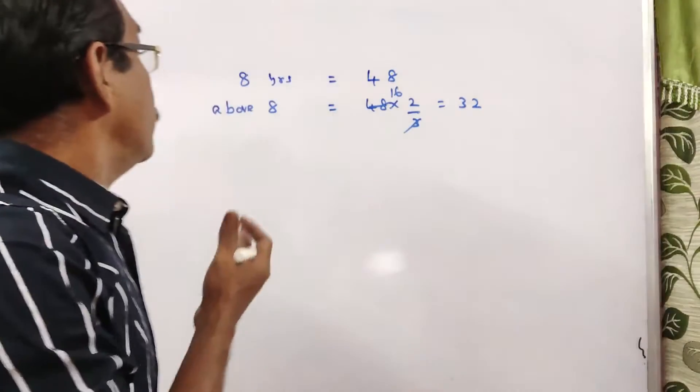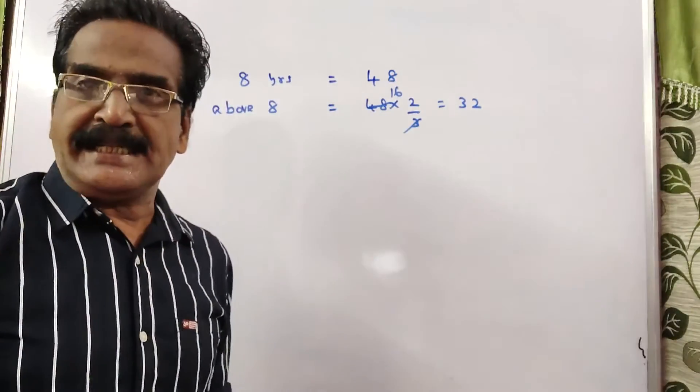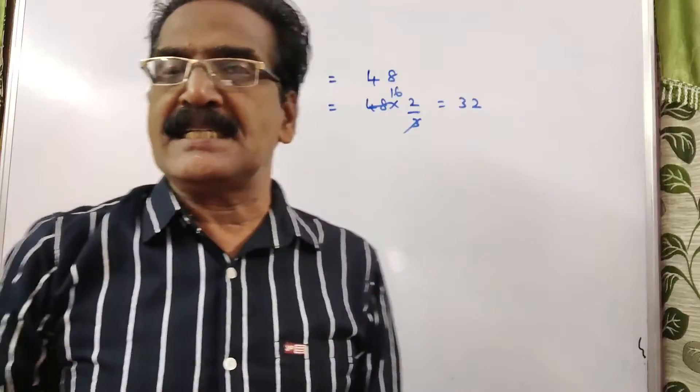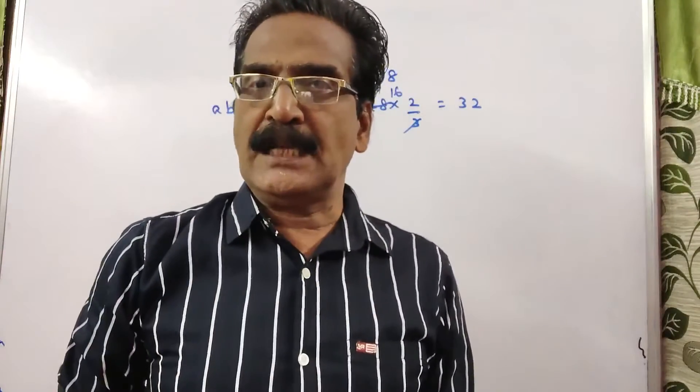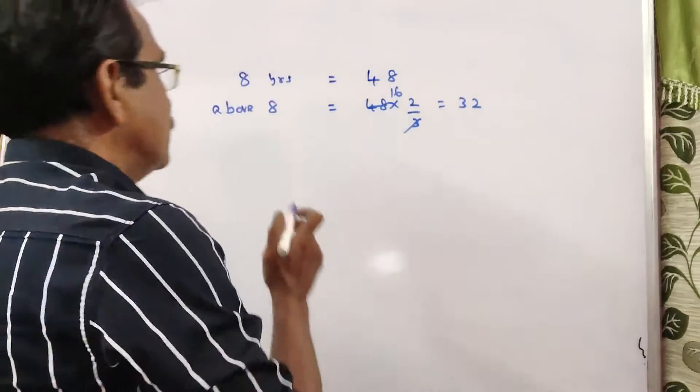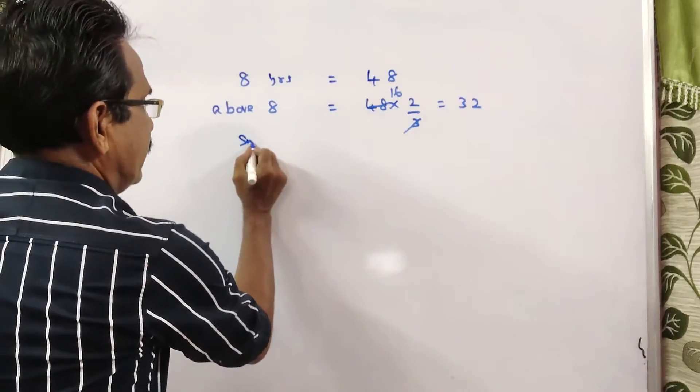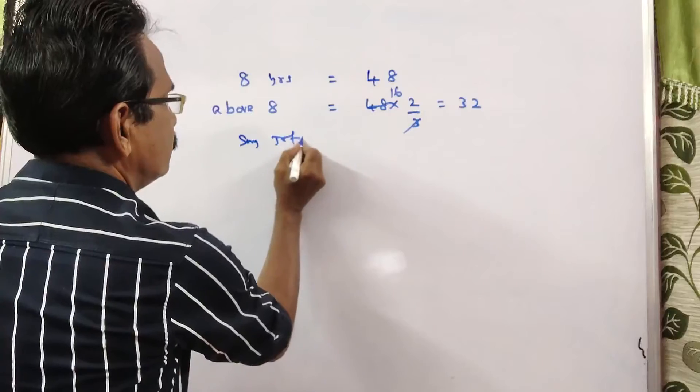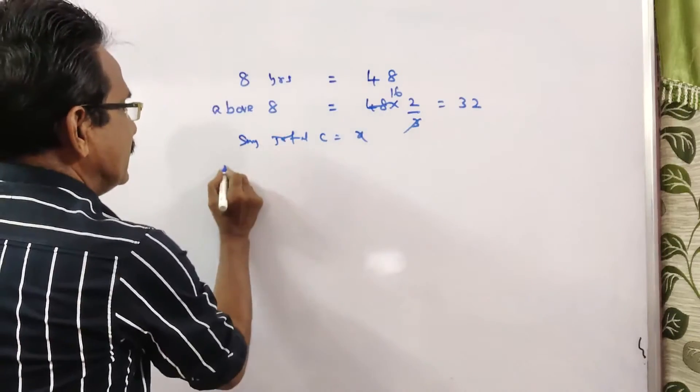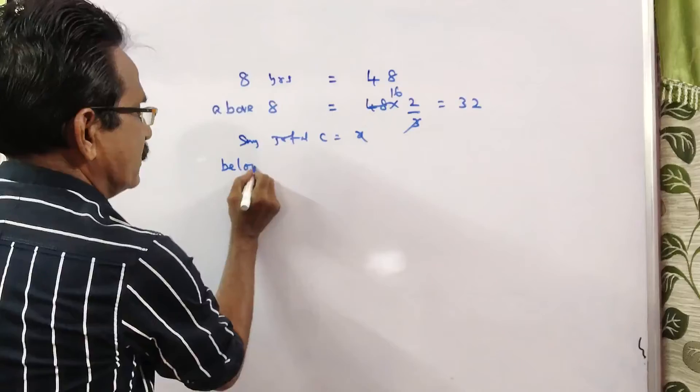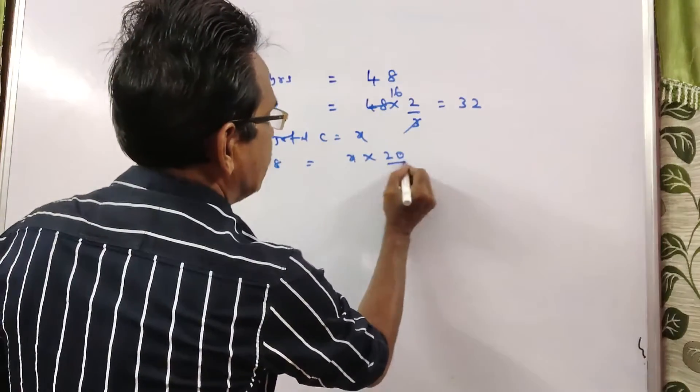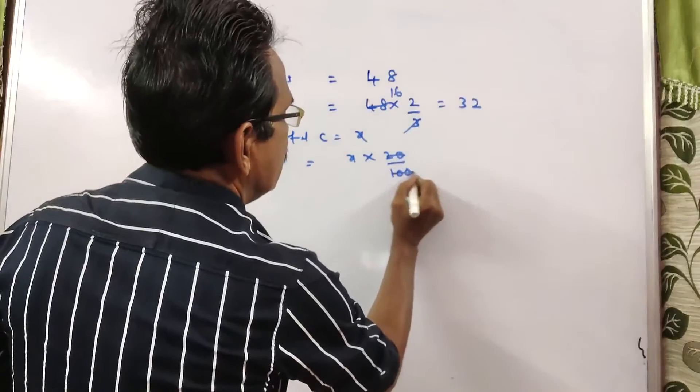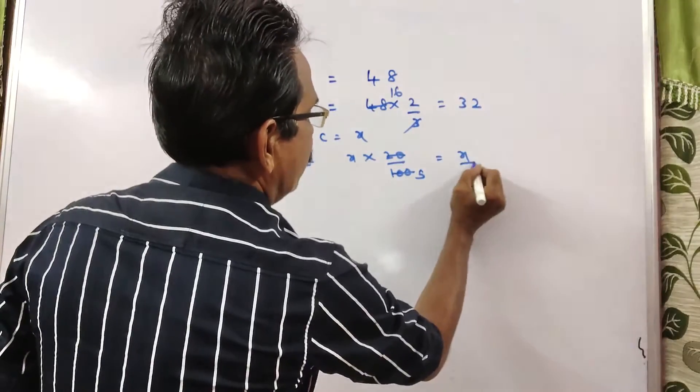Now, children below 80 years is 20% of the total number of students. Say the total number of students is x. Then children below 80 years is 20% of total children, that is x/5.